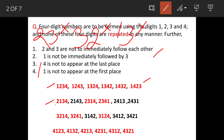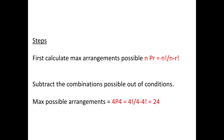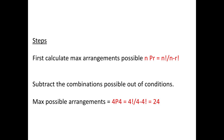Looking at these conditions, all numbers marked in red will not be counted. Only numbers in black are to be counted, and the total possible valid arrangements are 6.